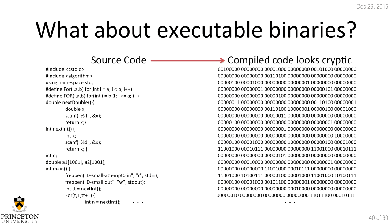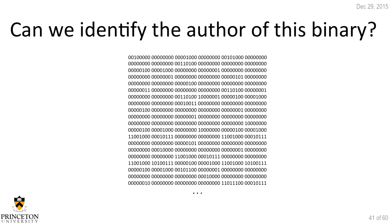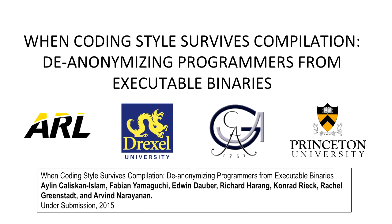When you have source code — say 20 lines — and you compile it, you get binaries: zeros and ones, thousands of them. You can't personally understand anything just by looking at it. Now I'll talk about the second part of this talk: what happens when you compile code and try to de-anonymize programmers from their executable binaries. This is the paper that just went public today — you can look at it on my website.